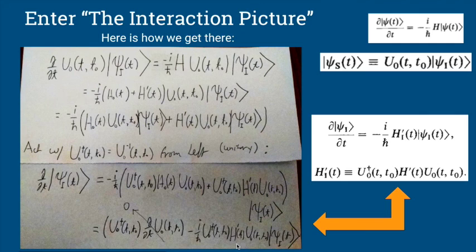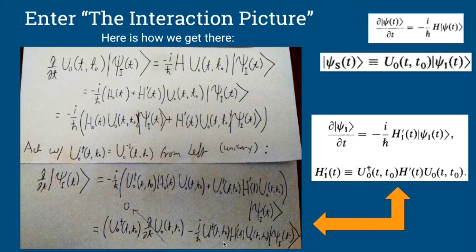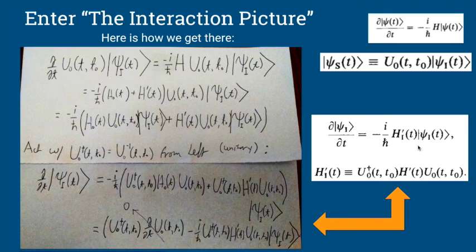We're left with the term containing H′ flanked by U₀ and U₀†, which we've defined as H′_I (the interaction H′). So we've arrived at what we were trying to show: the time derivative of our interaction picture wave function can be expressed in Schrödinger equation form using only H′_I. The time evolution of the interaction picture is only dependent on the perturbation.